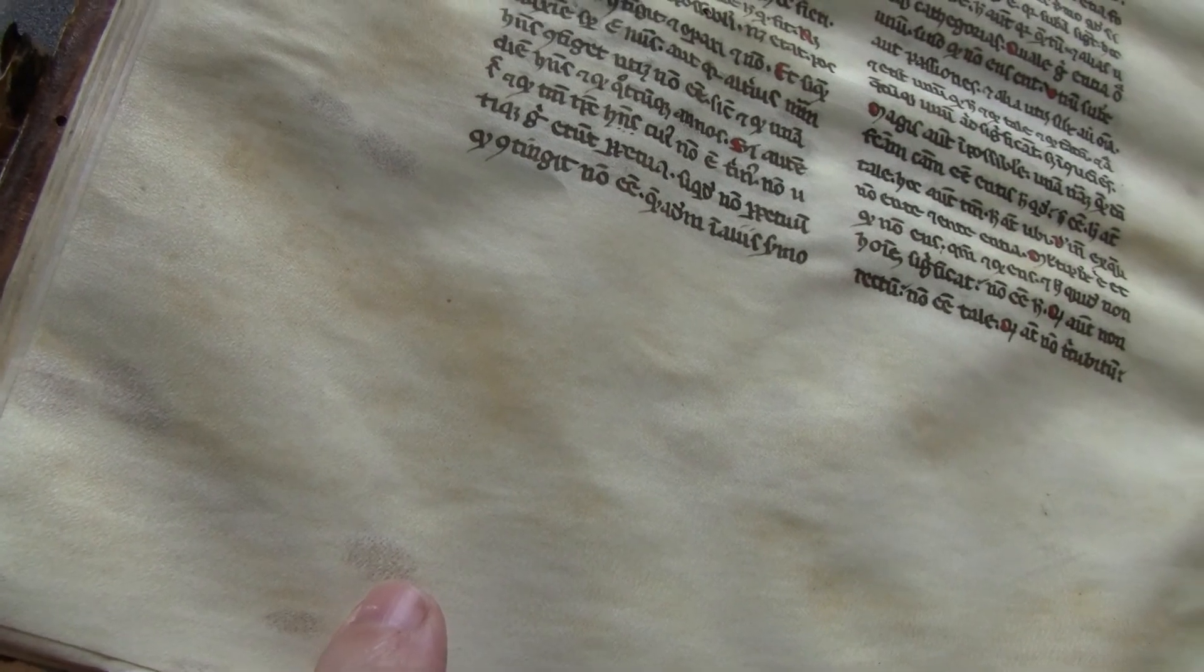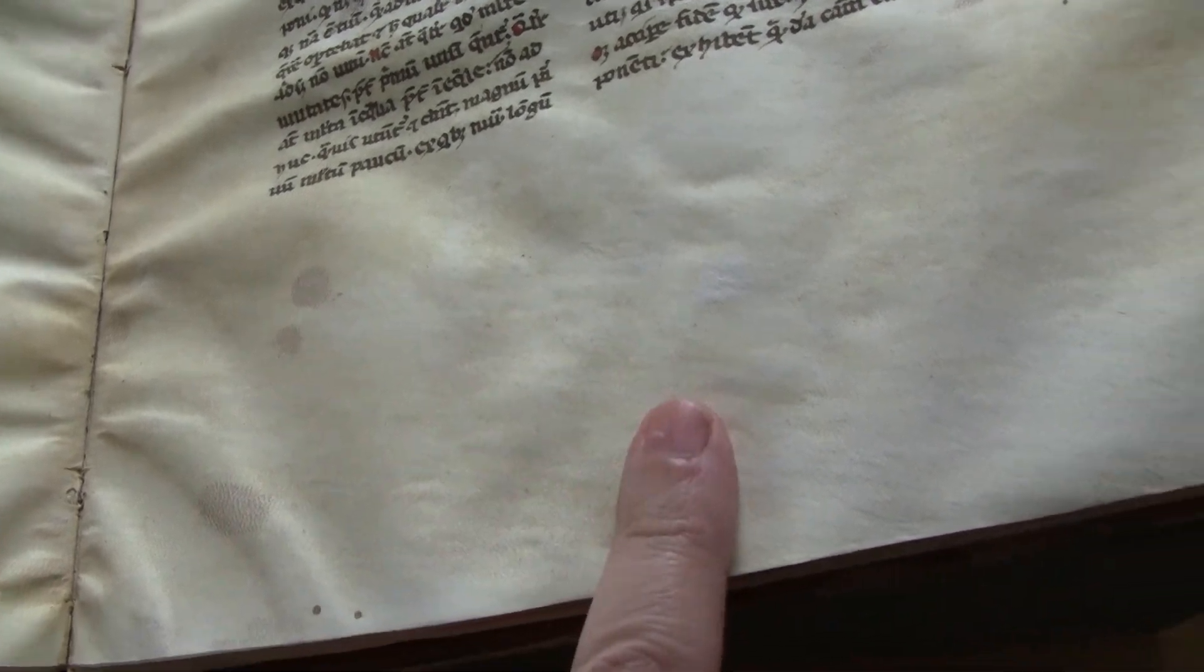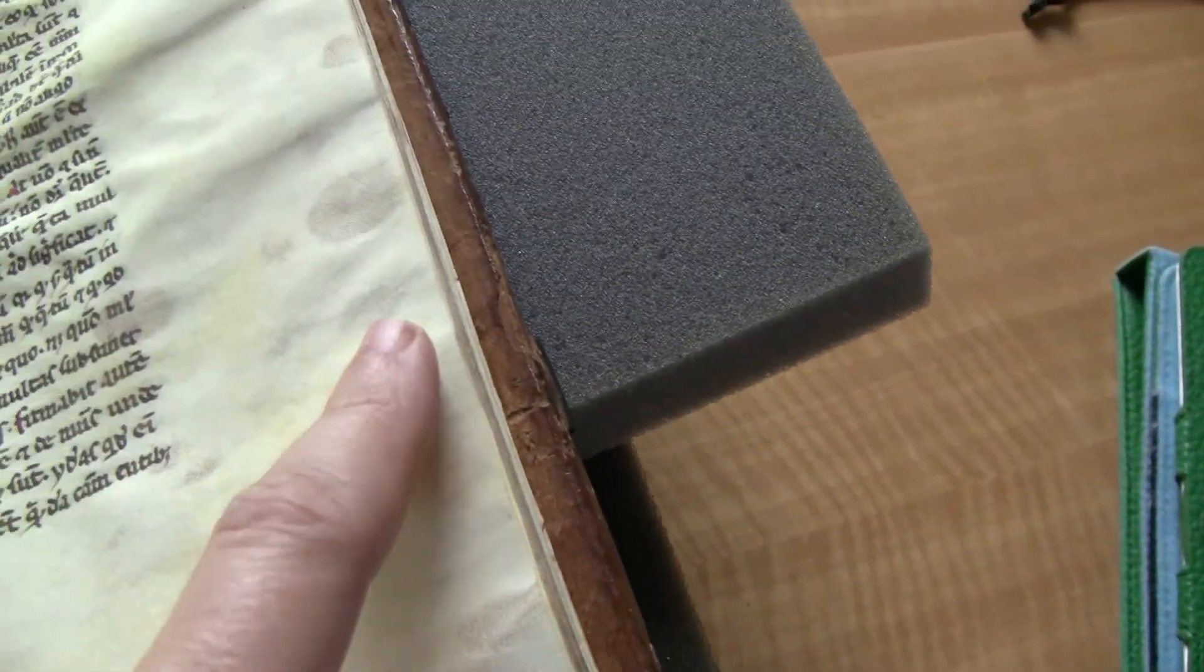And it's got these funny, I don't know what these are, but sort of patches of darker areas. Perhaps that indicates that the animal had something on the skin or I don't know what. And so let's turn a few more pages.